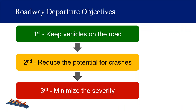Here's a reminder of our three objectives in this webinar series: first, keep vehicles on the road; second, reduce the potential for crashes and provide areas for recovery; third, minimize the severity of crashes that do happen. In this session, we'll discuss treatments that can help a driver recover control and avoid a crash if they leave the road: shoulders, the safety edge treatment, a centerline buffer, a clear zone, and traversable slopes.